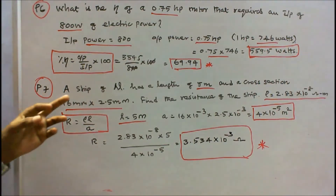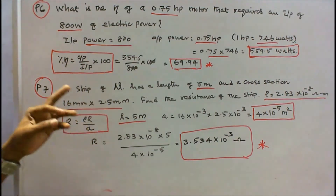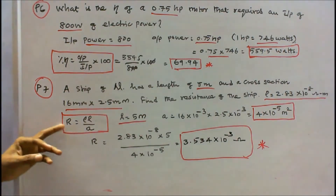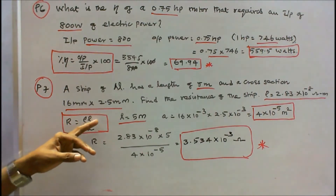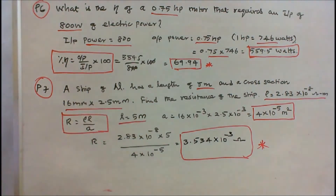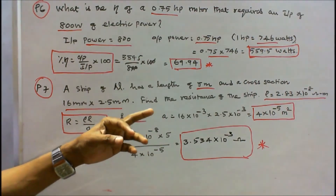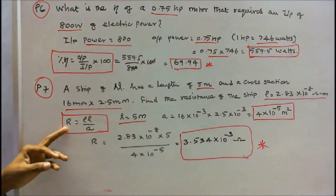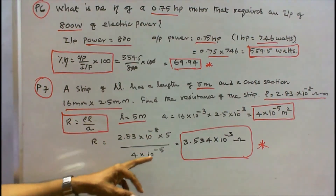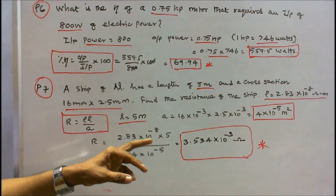Problem 7: A strip of aluminum has a length of 5 meters and a cross-section of 16 mm × 2.5 mm. Find the resistance. Resistivity ρ = 2.83 × 10^-8 ohm-meter. Using R = ρL/A, the area A = 16 × 10^-3 × 2.5 × 10^-3 = 4 × 10^-5 m². Therefore R = (2.83 × 10^-8 × 5) / (4 × 10^-5) = 3.534 × 10^-3 ohms.